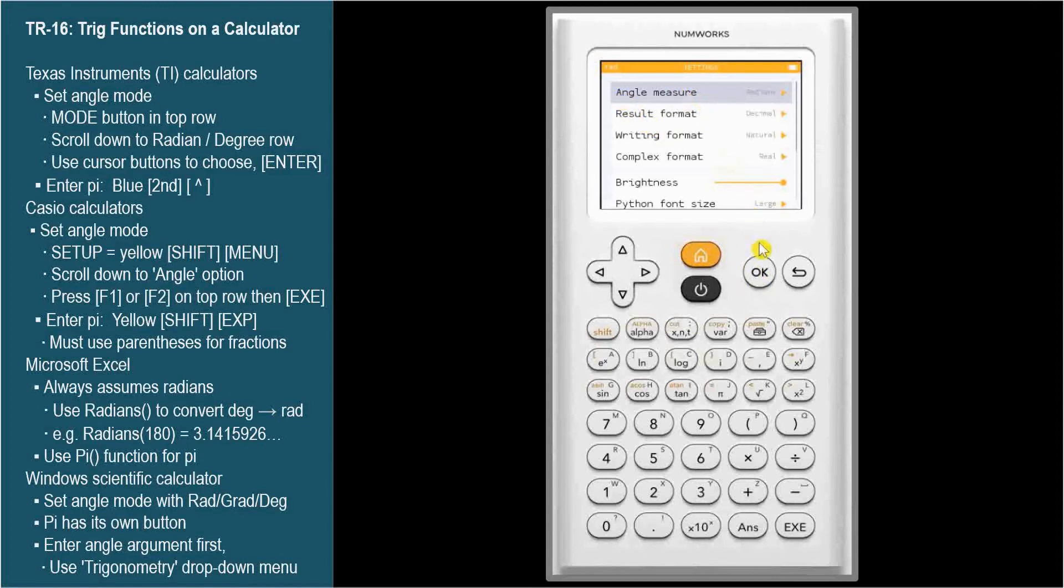Press either OK or cursor right to see the angle measure choices. Scroll down to your choice. We'll start with degrees and press OK.